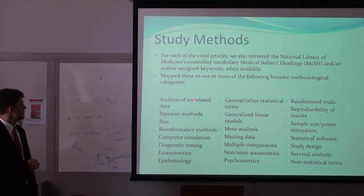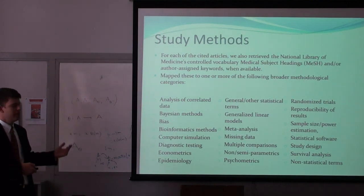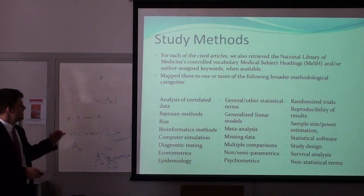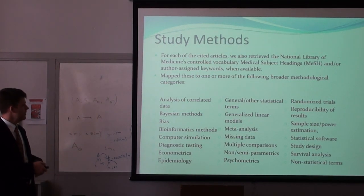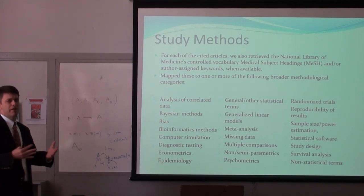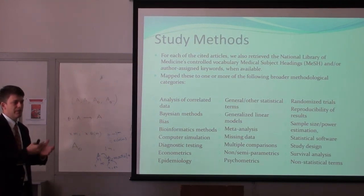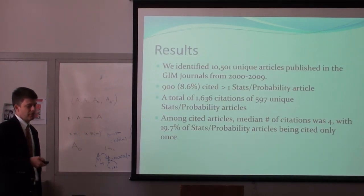The broader categories included: analysis of correlated data, Bayesian methods, bias, bioinformatics methods, and meta-analysis — which I'll talk about because it will pop up later. These are basically the categories we mapped all the keywords into. I also included non-statistical terms because terms like 'men,' 'African-Americans,' and so on — terms with no statistical meaning — would end up in here as well, and that was actually a large component of the keywords.